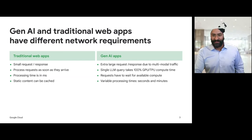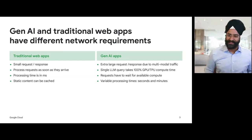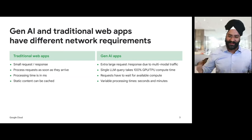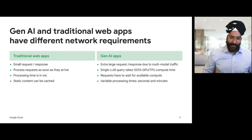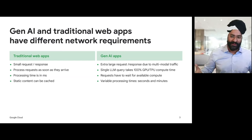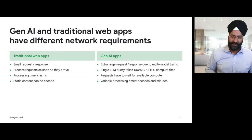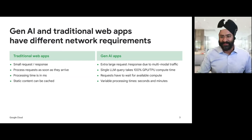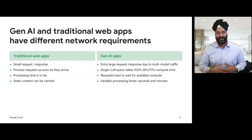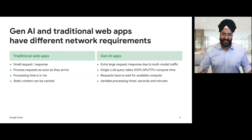Let me share a few differences between these applications. Traditional web applications use small requests and responses with smaller packet size. The requests are processed as soon as they arrive and processed in milliseconds. We can also cache static content with content delivery networks, resulting in faster response time. With Gen AI applications, we see extra large requests — responses come back due to the multi-model traffic used by LLMs. A single LLM query or prompt can take 100% of the TPU-GPU compute time, so processing times are much longer. Requests frequently have to wait in a queue for available compute cycles, so processing time is highly variable and could be in seconds to minutes.